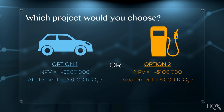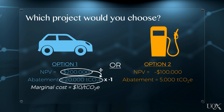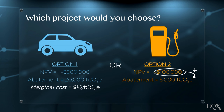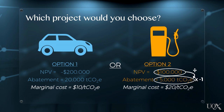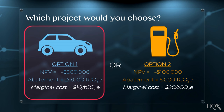Going back to our example, this means the fleet upgrade has a marginal abatement cost of $10 per tonne of CO2 equivalent, while the fuel switching project will cost $20 per tonne of CO2 equivalent. Now, which project would you choose? Now that we've factored in the projects' respective abatement potential, the fleet upgrade is the better option.